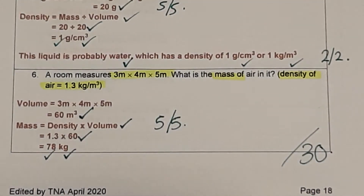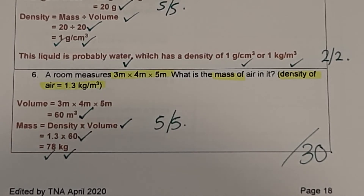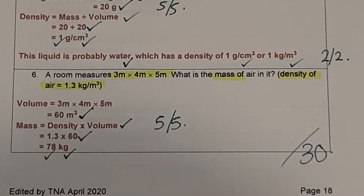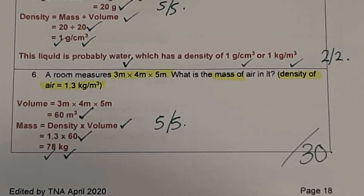If you've got 25 or more, that's excellent work. If you've got more than 20, well done. If you have 15 or less, you need to have another go — either you haven't been writing out all the steps, or you've made some significant mistakes. For any questions where you've got less than half marks, review those questions in particular.